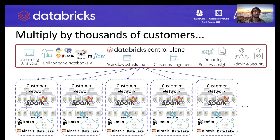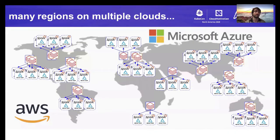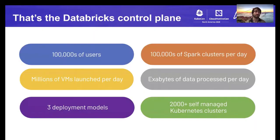We also write our services in Scala and Python. Databricks doesn't just operate a single control plane — we operate many control planes all around the world and across multiple clouds. In fact, we operate over 2,000 Kubernetes clusters worldwide, accessed by over 100,000 users. These control planes manage hundreds of thousands of Spark clusters every day and launch millions of VMs to execute customer-submitted Spark jobs that process exabytes of data.